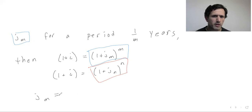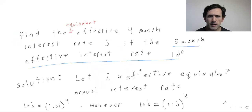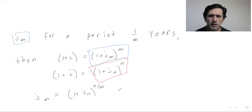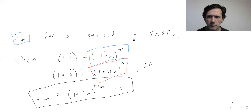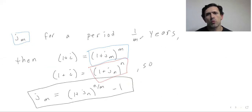And we get the formula, which you can remember if you so desire. But I honestly just went through this whole procedure — write 1 plus I equals 1.01 to the fourth, that equals 1 plus J to the third, then solve for J. Either way, the formula is: Jm equals 1 plus Jn, raised to the power N over M, minus 1. This is given Jn, the interest rate for a period of 1 over N years, and we want to find Jm, the equivalent interest rate for a period of 1 over M years.